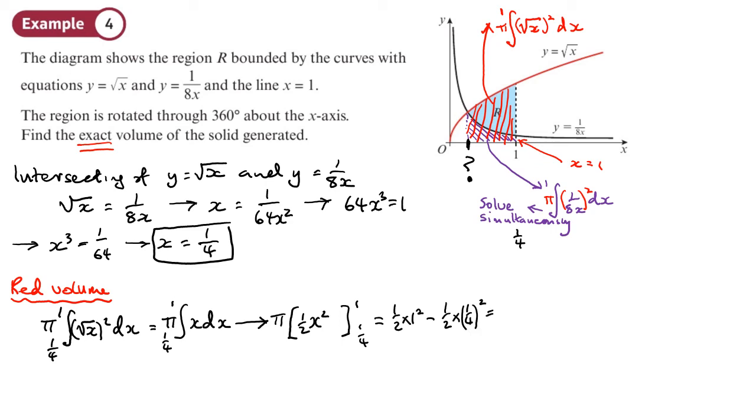We'll work that out. So that's basically 1/2 minus 1/2 again times by 1/4 squared, which is 1/16. So I get 15/32. This is the volume of the red bit. Now I want to work out the purple volume, and I'm going to subtract that from the red volume to get just the bit that I want. So the purple volume, same limits, 1 and 1/4, but this time I need to square 1/8x dx.